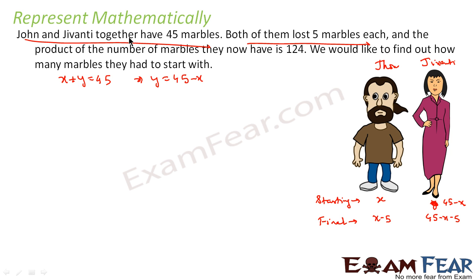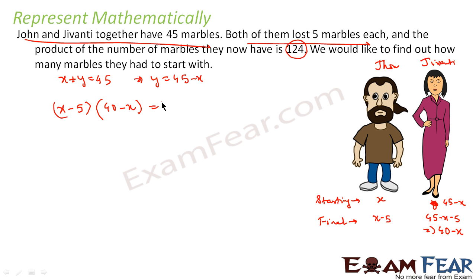The question says the product of the marbles they have now is 124. So we multiply John's current count by Jivanti's current count: (x - 5) × (40 - x) = 124, since 45 - 5 = 40. Expanding: x × 40 = 40x, and x × (-x) = -x²; then -5 × 40 = -200.